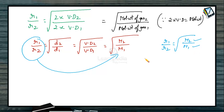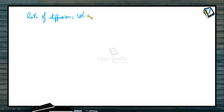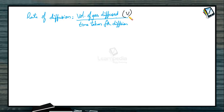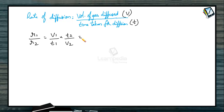Now, let us understand the meaning of rate of diffusion. Rate of diffusion is the volume of gas diffused in time t, that is V/T. So we can write R1/R2 = (V1/T1) × (T2/V2) = √(M2/M1). This relation will be useful for working out numericals.